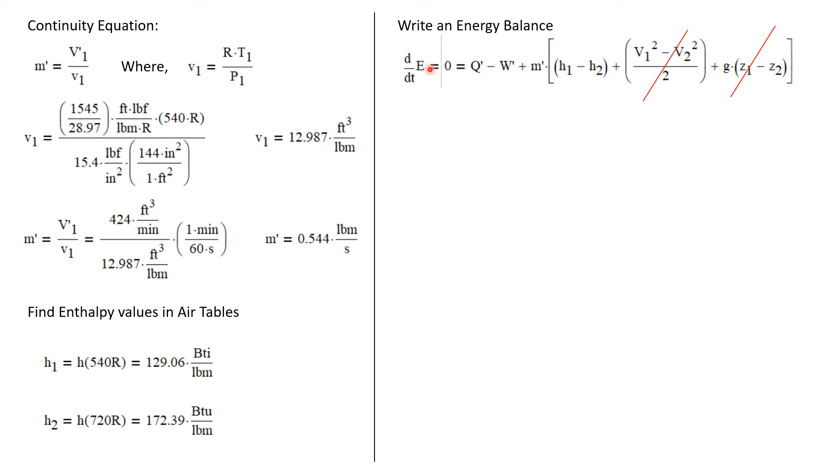Now we can write an energy balance. We know dE dt is 0 because it's operating at steady state. That's equal to Q dot minus W dot plus M dot times the change in enthalpy plus the change in kinetic energy plus the change in potential energy. Now, we were given that we were to ignore any changes in kinetic and potential energy as being insignificant.